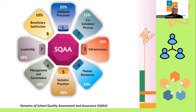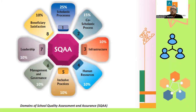To summarize the eight domains: scholastic curriculum, co-scholastic extracurricular activities, infrastructure — the building and facilities, human resources — the people involved, inclusive practices — children with all types of needs, management and governance — how the whole thing is planned and implemented, leadership — principal and coordinators, and beneficiary satisfaction — how happy all associated with the school are with its running.